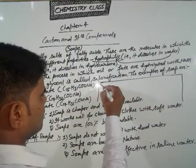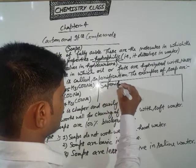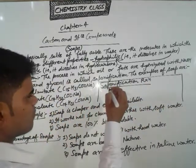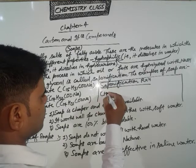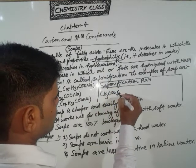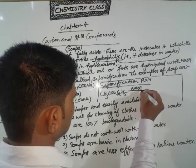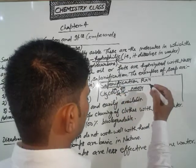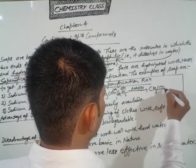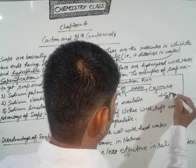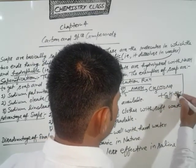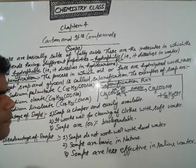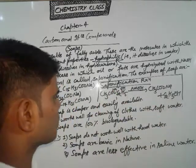In the saponification reaction, an ester molecule like CH3COO-C2H5, when reacted with NaOH — that means reacting with Na and OH — will convert into CH3COONa plus C2H5OH. This is a very simple reaction. You can write the saponification example like that: whenever an ester reacts with NaOH, it provides sodium ethanoate and an alcohol derivative.